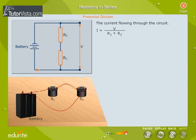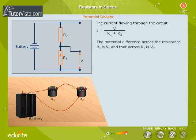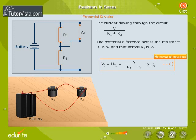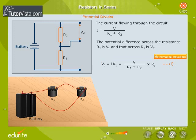The current flowing through the circuit is I = V / (R1 + R2). The potential difference across resistance R1 is V1, and that across R2 is V2. V1 = I·R1 = V × R1 / (R1 + R2). This is Equation 1.